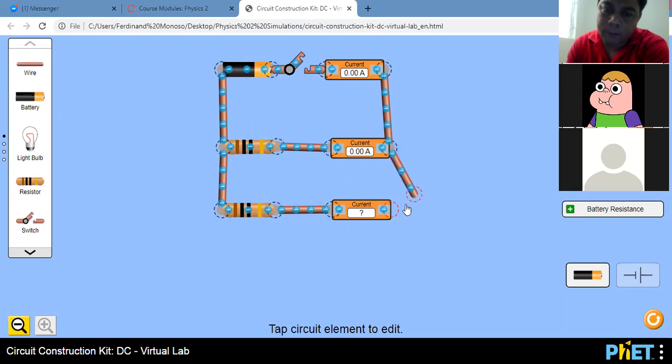And the one at the top, this one at the top, is the I total, or the ammeter total. This will be our I1, and this will be our I2.